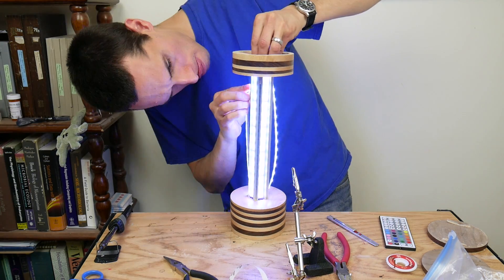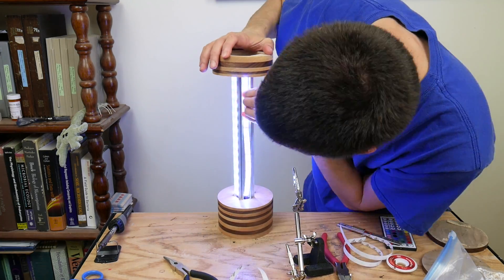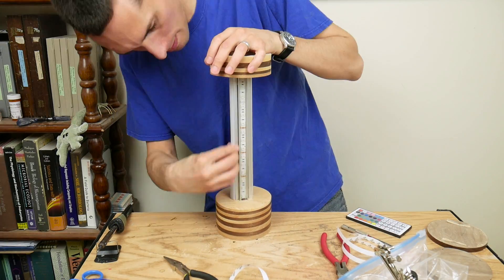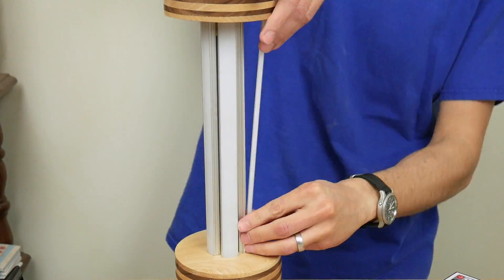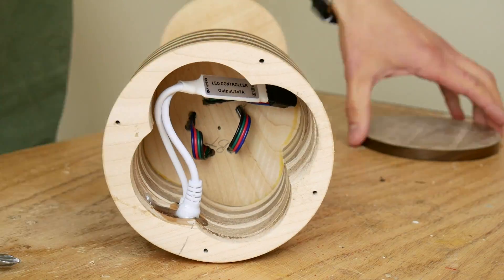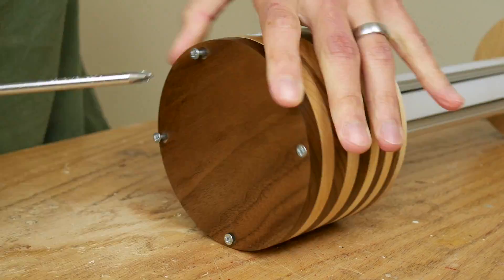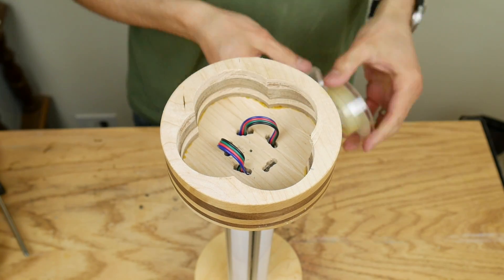I removed the protective film from the diffusers and snapped those into place. Then I screwed the bottom back on. And reattached the top with double sided tape.